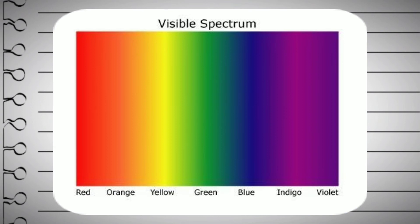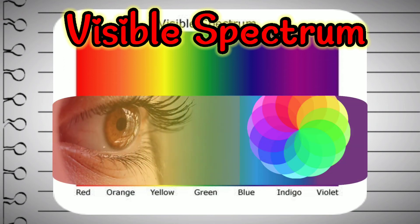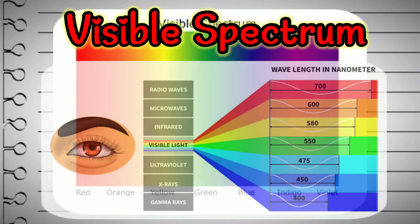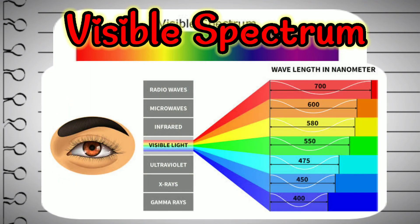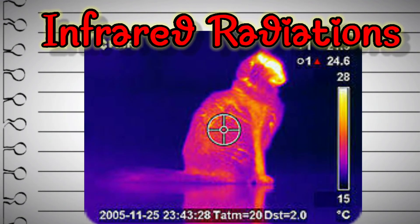The next type of electromagnetic radiation is the most familiar to us — the visible spectrum. The portion of the electromagnetic spectrum that is visible to human eyes is known as the visible spectrum. The visible spectrum is divided into different parts which we call colors. We can see different colors of light because of the different wavelengths within the visible spectrum. The electromagnetic radiation after the visible spectrum is infrared radiation.